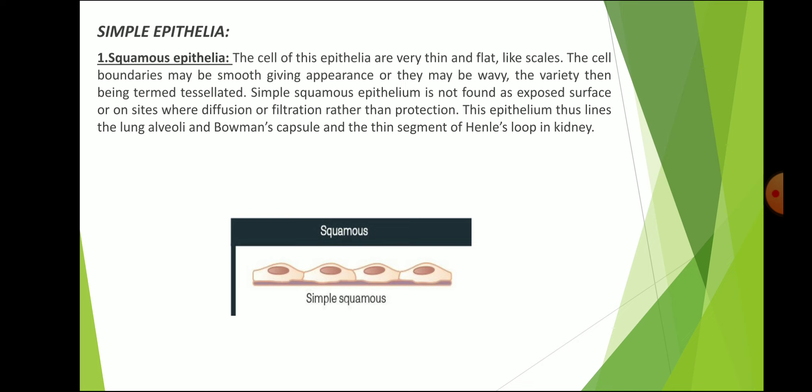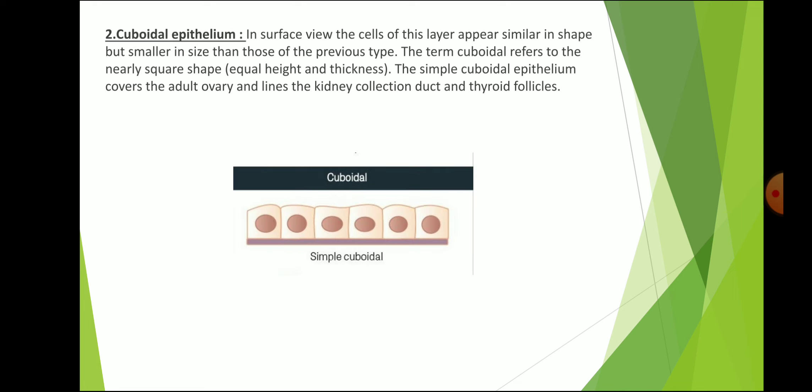The second type of simple epithelium is cuboidal epithelium. In surface view, the cells of this layer appear similar in shape but smaller in size than those of squamous epithelium. The cells are not exactly like cubes but are polyhedral. The term cuboidal refers to the nearly square-shaped, equal height and thickness of the cells in vertical section. The simple cuboidal epithelium covers the adult ovary and lines the kidney collecting duct and thyroid follicles.